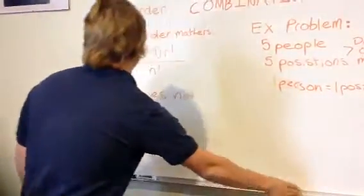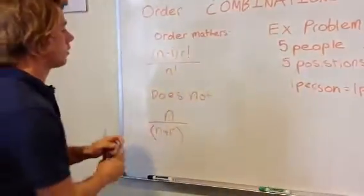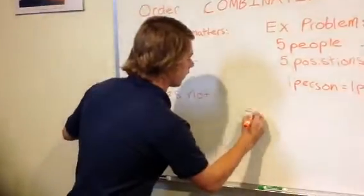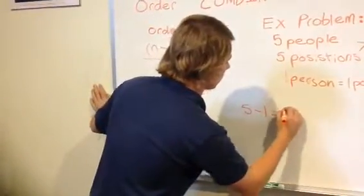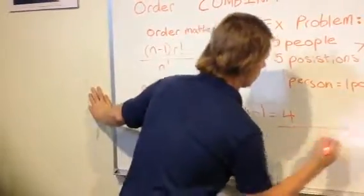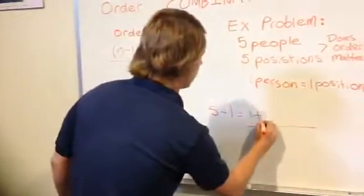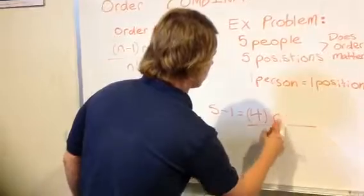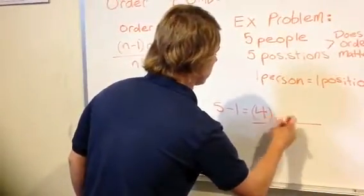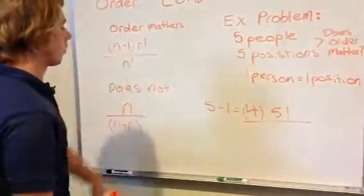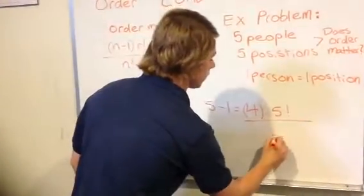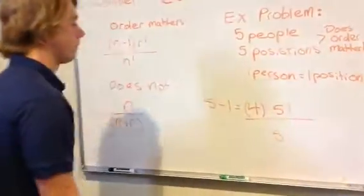Now on the next equation, you have N minus 1, which is 5 minus 1, equals 4 over R, which is 5, with the exclamation point, over N, which is 5, with the exclamation point.